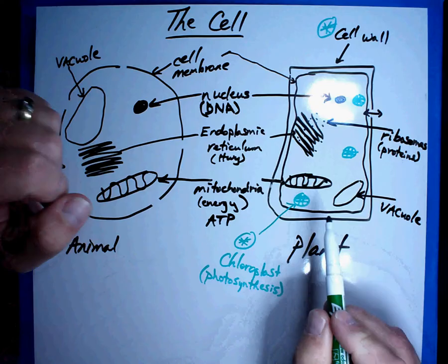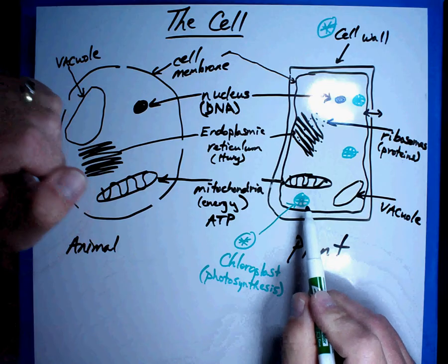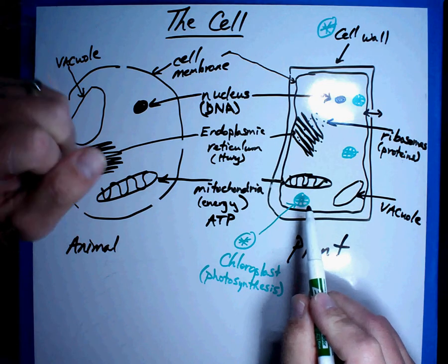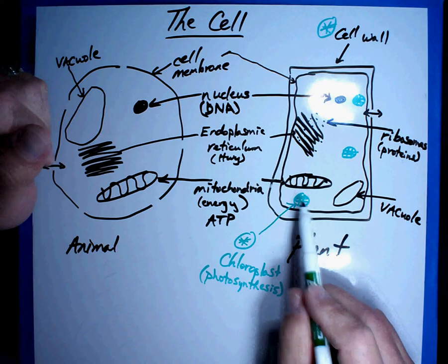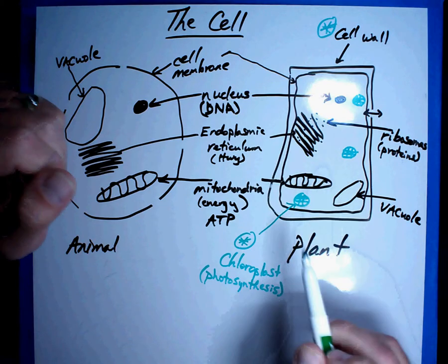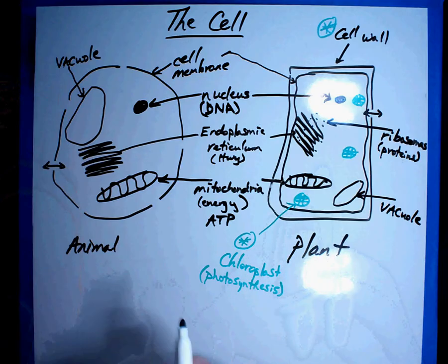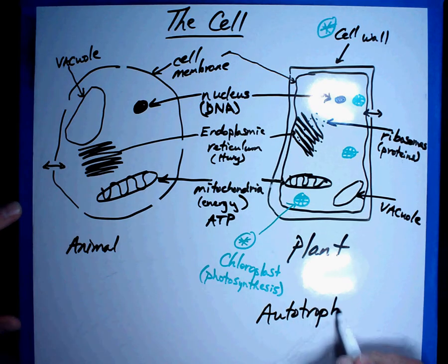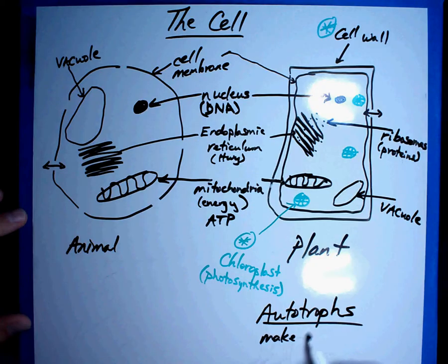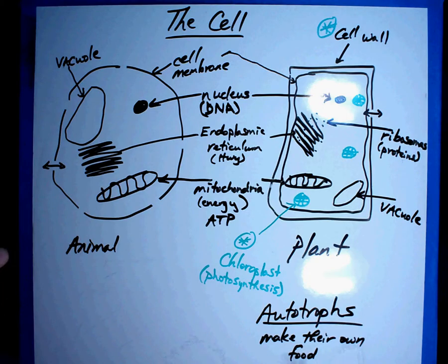Photosynthesis. Now, chloroplast is sort of like the solar cell on a calculator. It is going to absorb light and it is going to transform that light into the energy that the cell needs. Now, the reason that plants do this is because they are called autotrophs. Plants are autotrophs. They make their own food. They sit out in the sun, collect that sunlight, and they make their own food.